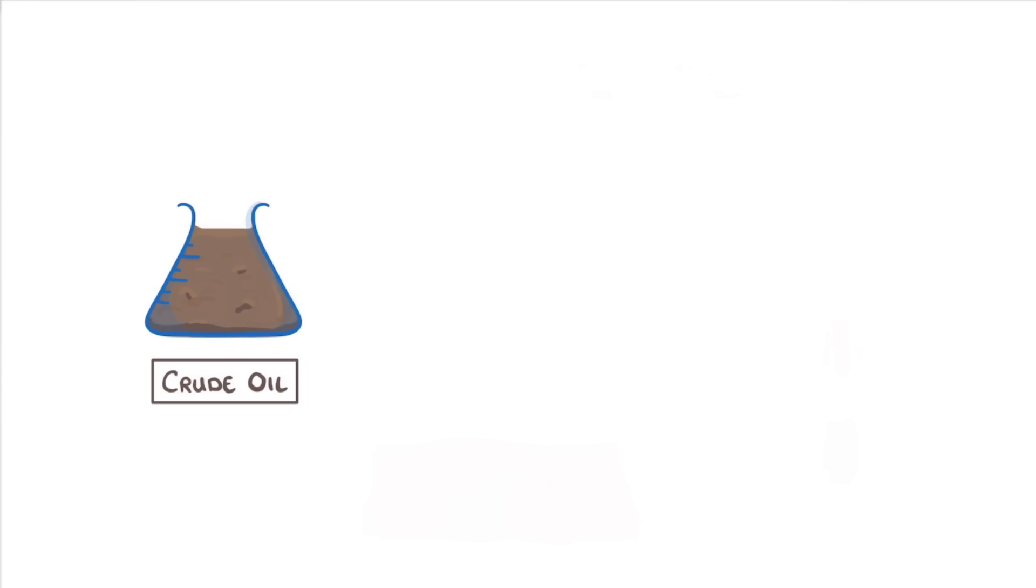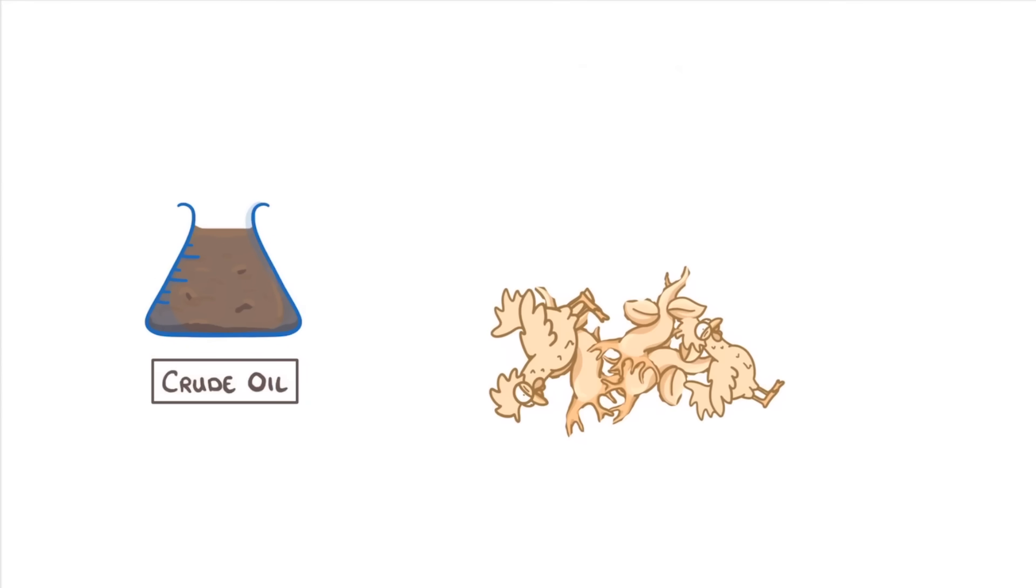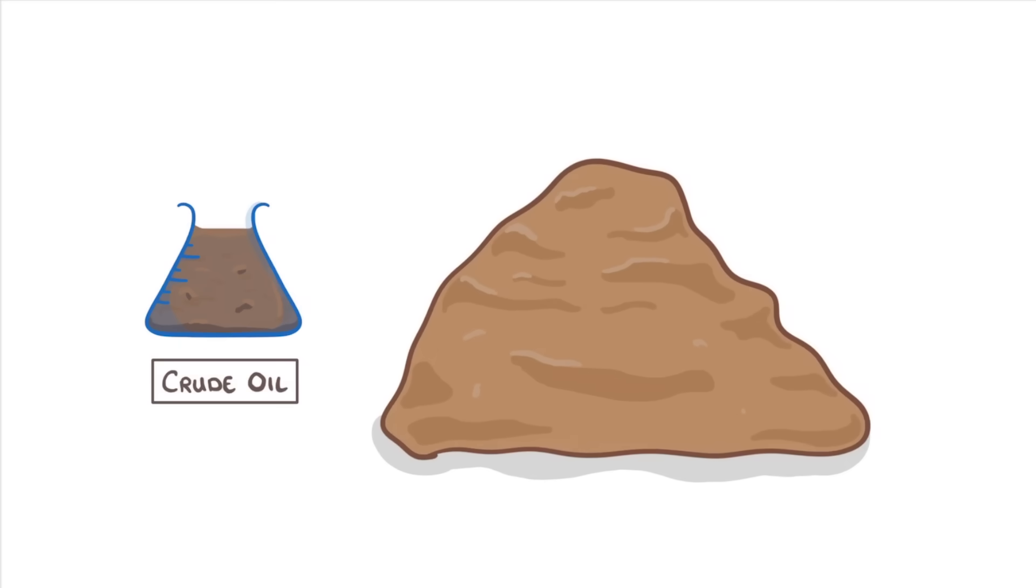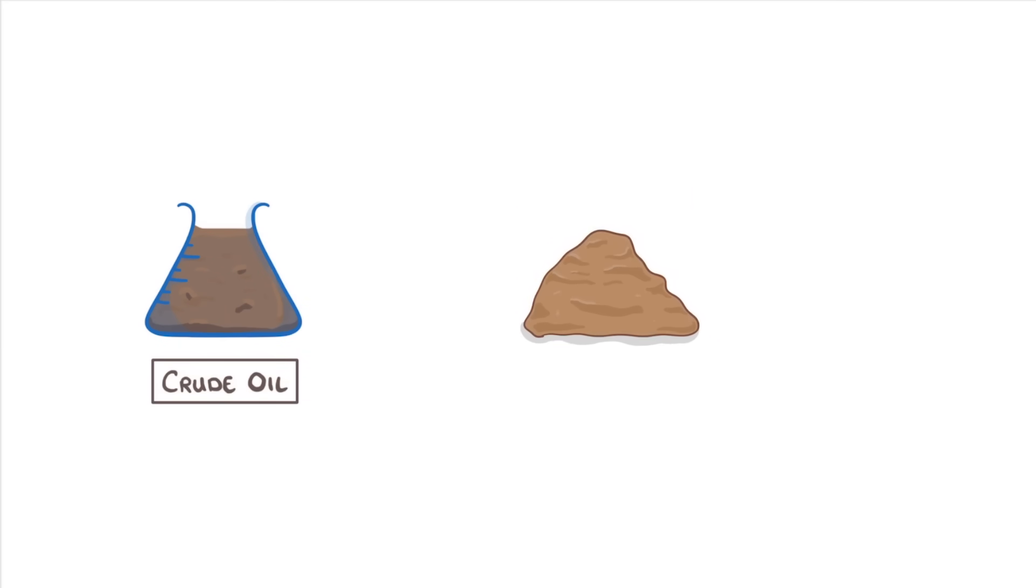Now crude oil is formed naturally from the remains of dead plants and animals, particularly plankton, that died millions of years ago and were buried in the mud. Then in the millions of years between then and now, the high pressures and temperatures under the ground turned this organic biomass into crude oil.